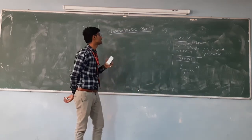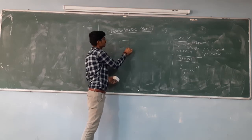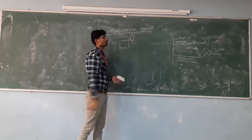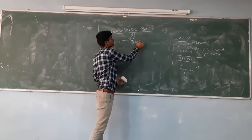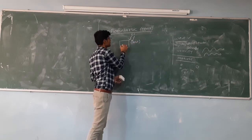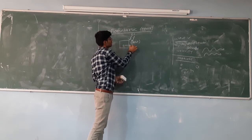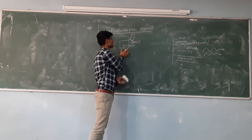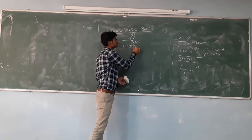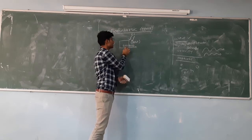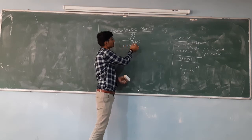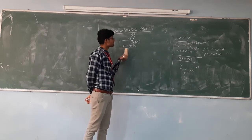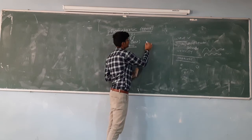Now let us discuss the photoelectric effect. Whenever light of suitable frequency falls on a metal surface — let us consider a photon of red color frequency incident on a metal surface. If this material has sufficient energy provided by this frequency, it ejects electrons from this metal surface. If the material does not have sufficient energy provided by this red color frequency, then this metal surface cannot eject electrons.